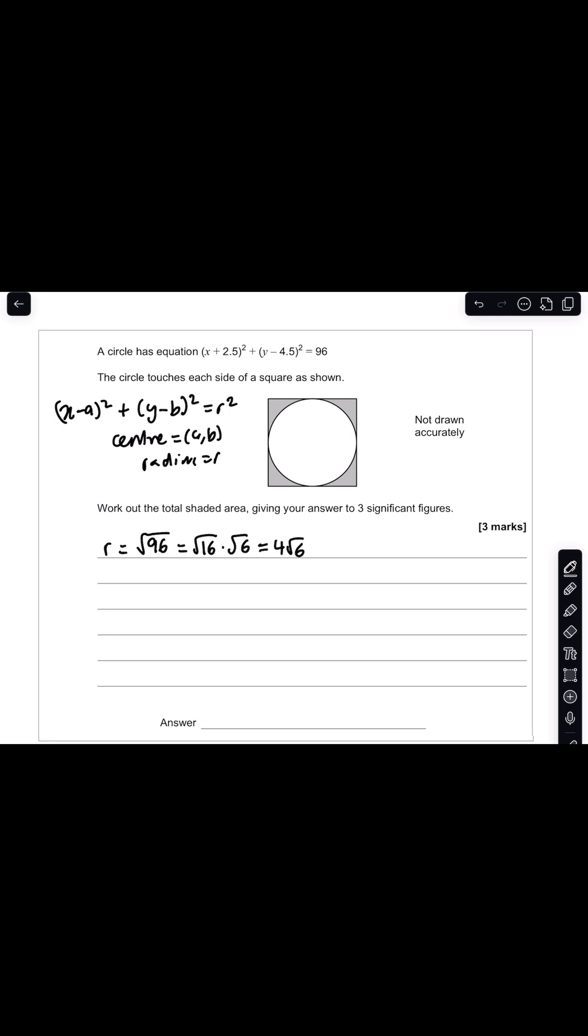What we need to do firstly is identify the area of our square. We'll need the length of our square. If our radius is 4 root 6, the diameter is two lots of our radius. So 2 times 4 root 6 and that gives us 8 root 6.